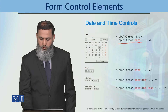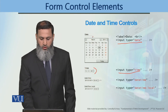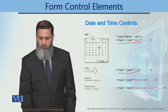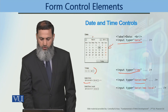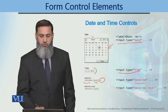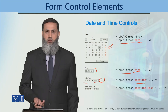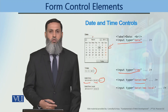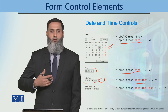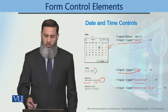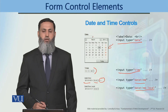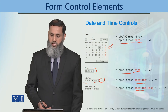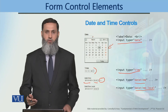If you have input type equal to time, you will see a time input control. If you use datetime, when you click the dialog box you will see a date, a time, and a time zone. If you want to see a local time zone, you use datetime-local, which allows you to enter a date and time in the local time zone without a time zone offset.